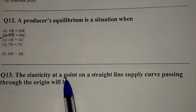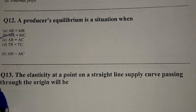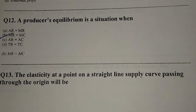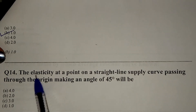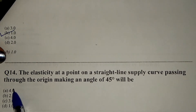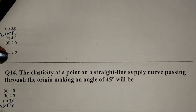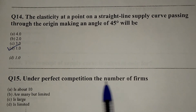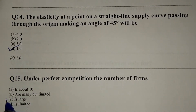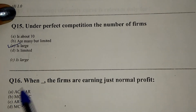The elasticity at a point on a straight line supply curve passing through the origin will be 1.0. The elasticity at a point on a straight line supply curve passing through the origin making an angle of 45 degrees will be option D: 1.0. Under perfect competition, the number of firms is large — option C.